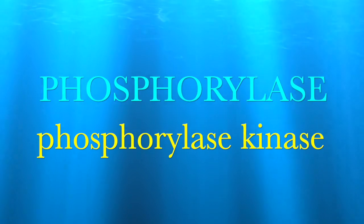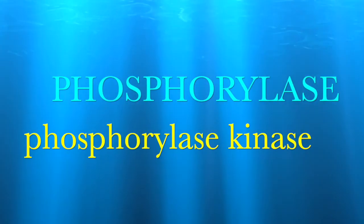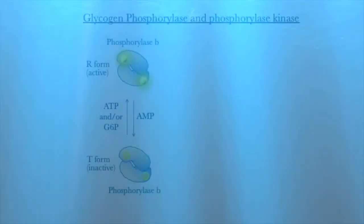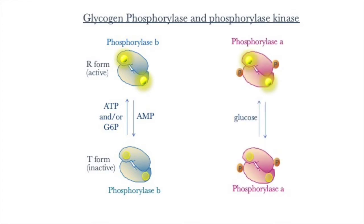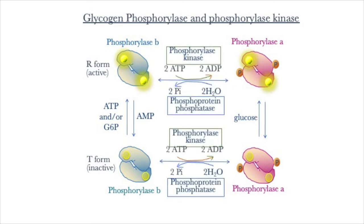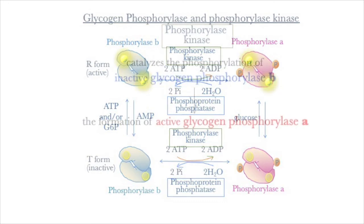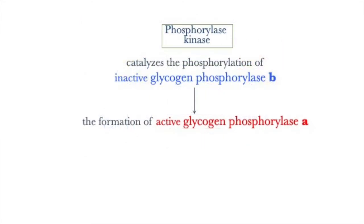Glycogen phosphorylase exists in two forms: phosphorylase B and phosphorylase A, with a slight difference between the liver and muscle versions. Phosphorylase kinase catalyzes the phosphorylation of inactive glycogen phosphorylase B, resulting in the formation of active glycogen phosphorylase A.